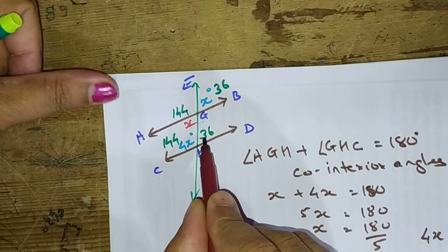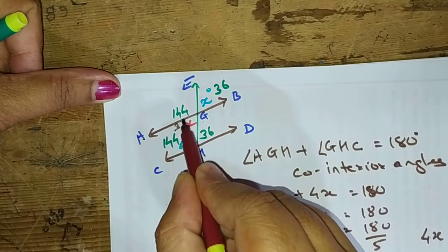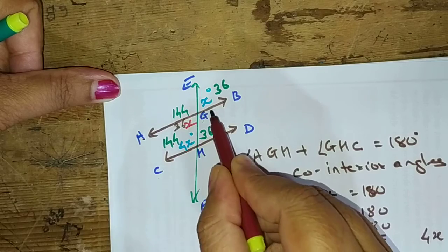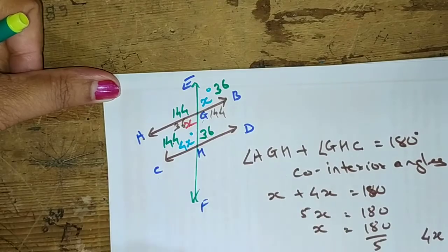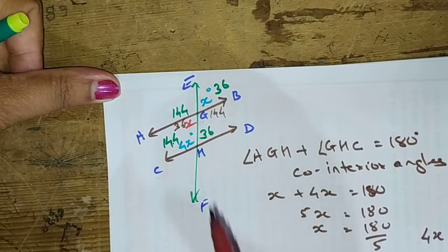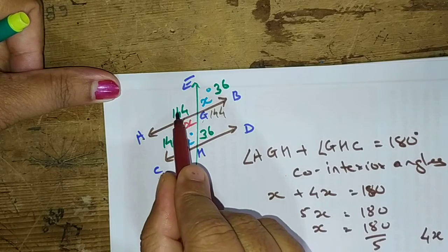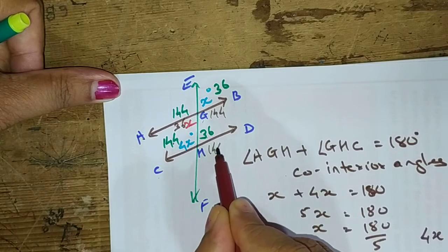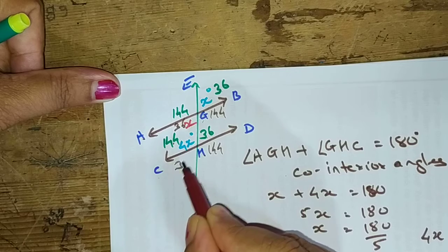And the remaining angles, by the alternate this is 36, this should be 36. 144, this should be 144. By the alternate exterior 144, so 144, 36, this is 36.